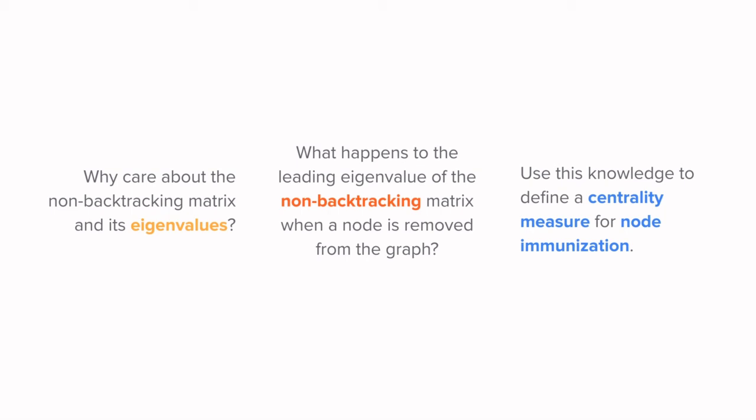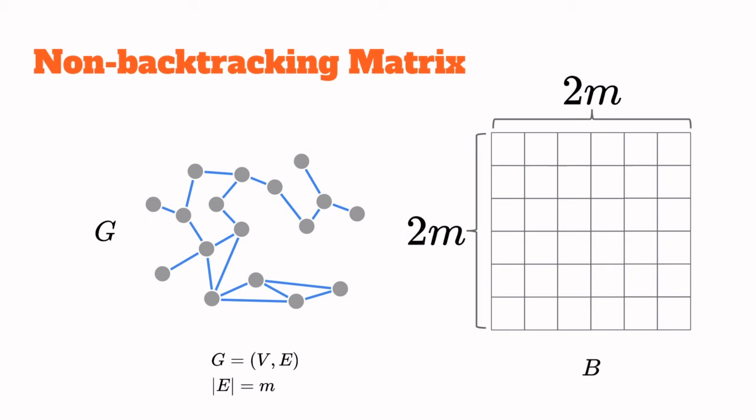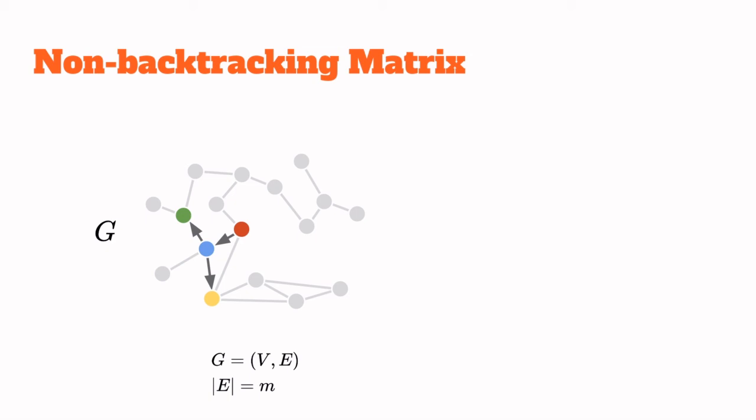Say you have the graph on the left with M edges. Then its non-backtracking matrix B will have two M rows and two M columns, so two rows and two columns per edge. This matrix is a transition matrix of a random walker that does not trace backtracks, that is it never traverses the same edge twice in succession. For example, going from the red node to the blue node and back to the red node is a backtrack and that is exactly what we're trying to avoid.